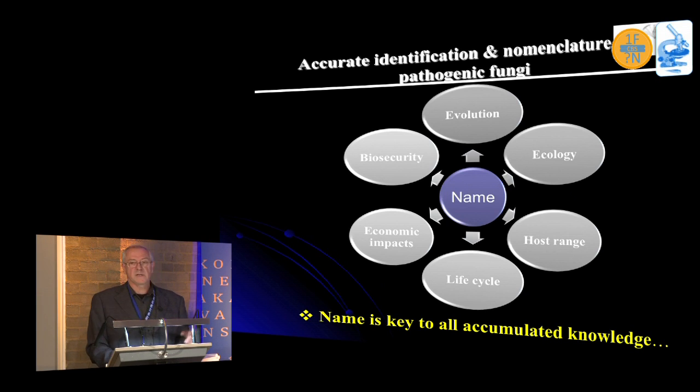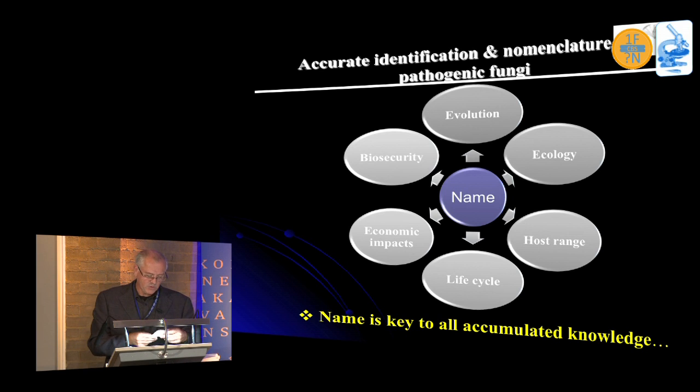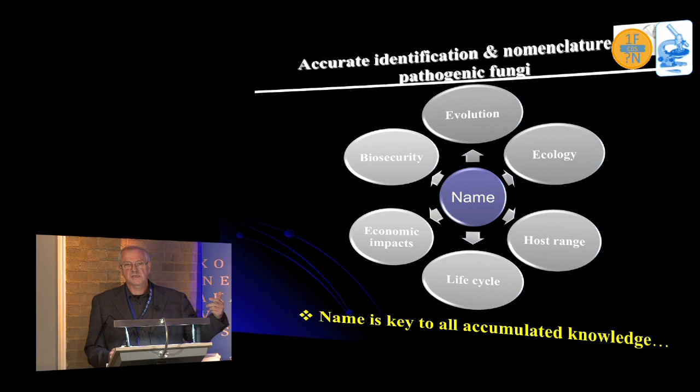Going back to the original point, it's very important to put a name on things. One thing we need to think about is the registration of epitypes — it's recommended now by the code, but maybe Pedro could say something about that. When you designate an epitype, you don't have to register it at the moment, it's just recommended, so we should consider making that a requirement. Also, there's the use of a teleotype, which is quite complicated.